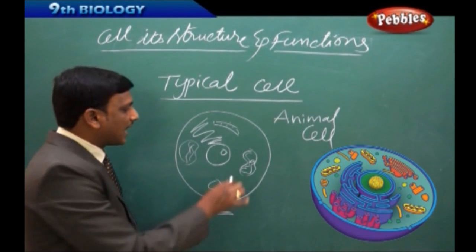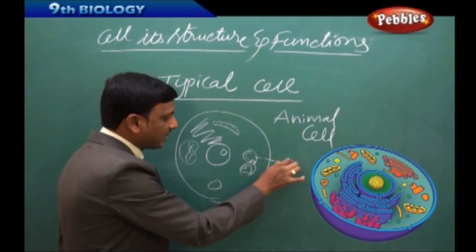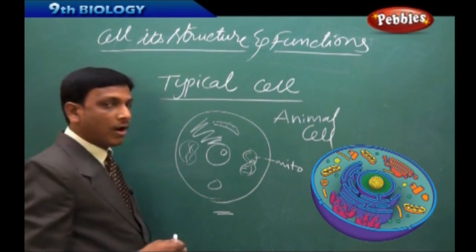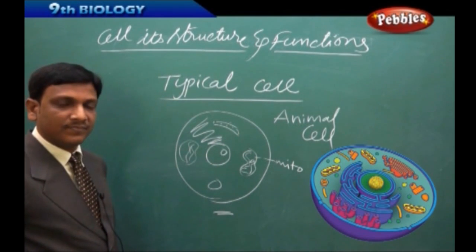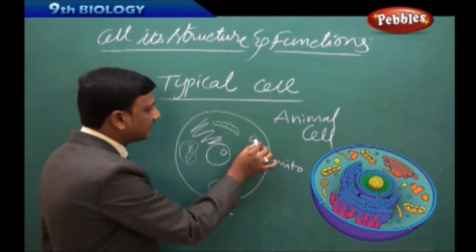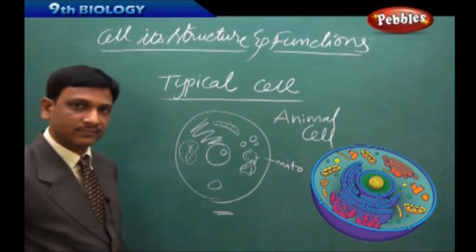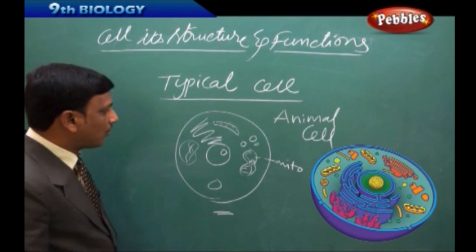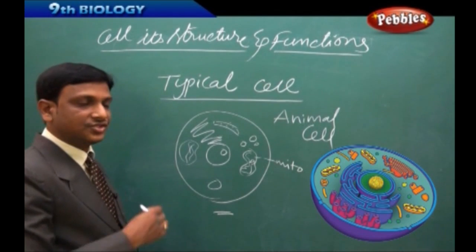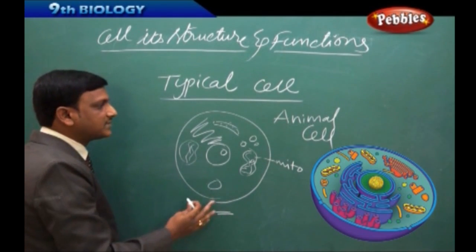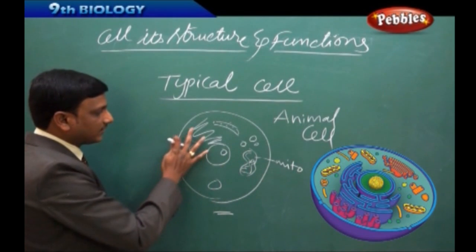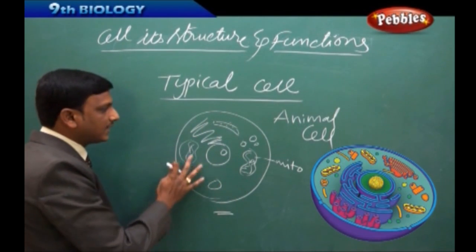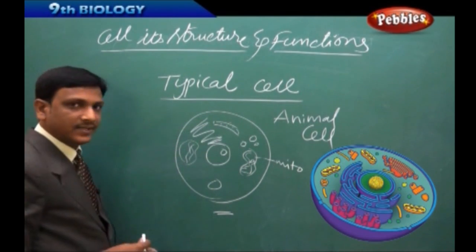Some animal cells have more number of mitochondria and they may or may not have a Golgi body. They may or may not have a vesicle. So, we are drawing a general diagram. So, this is a general diagram which represents an animal cell that showing all the cell organelles which generally appear in an animal cell is called a typical cell.